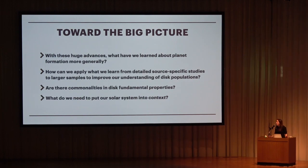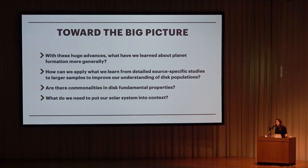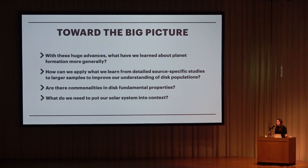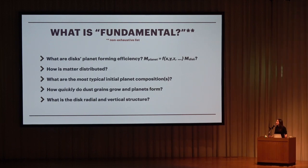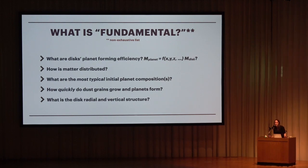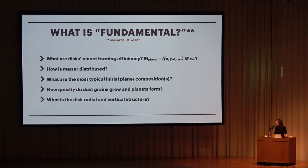With these huge advances in data and theoretical models, what have we actually learned about planet formation more generally? Can we apply what we've learned from detailed source-specific studies to start moving towards a big picture understanding of disks as a population? Are there commonalities in disk fundamental properties? Can we say something about whether planet formation is efficient, or what makes a disk good at forming planets? And what do we need to put our solar system into context — are we an outlier or somewhere in the middle?